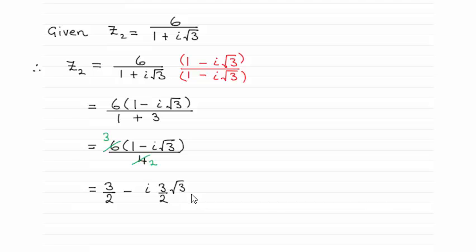In order to do this, multiply top and bottom by the complex conjugate of the denominator. Remember, that means switching the sign, so instead of 1 + i√3, it's now 1 - i√3.